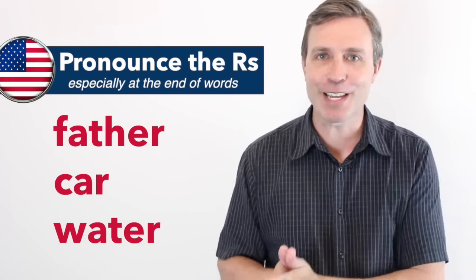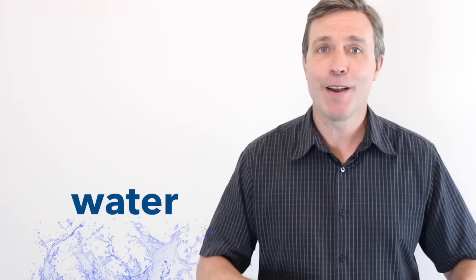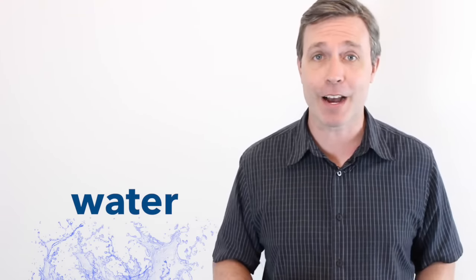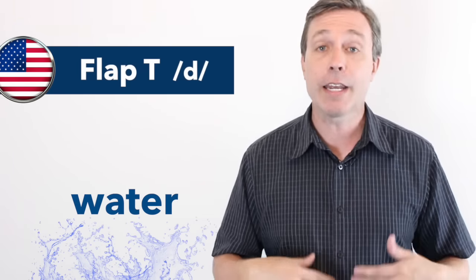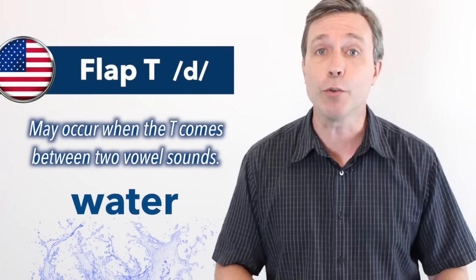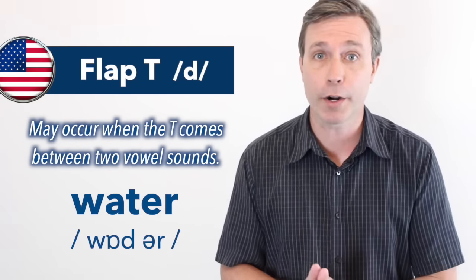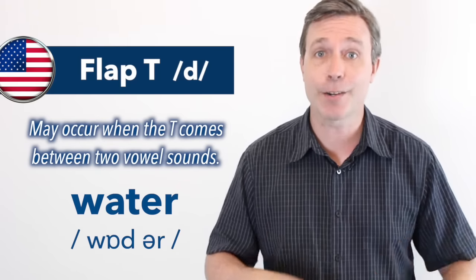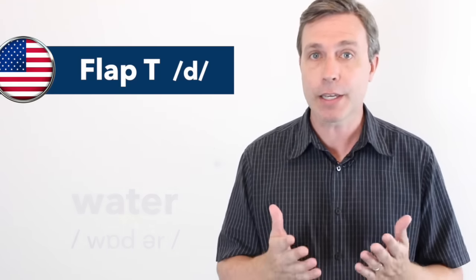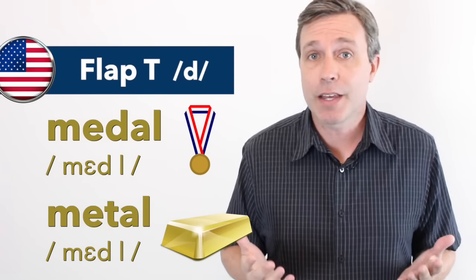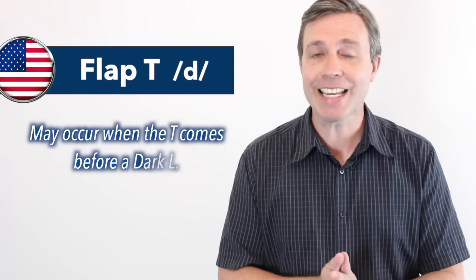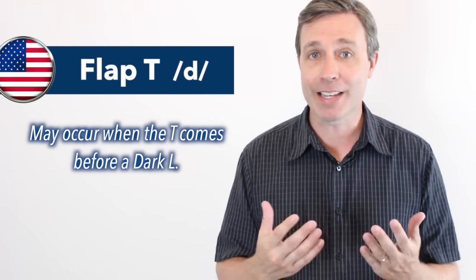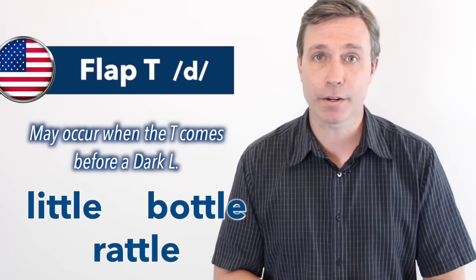We're going to build on this as we go through the lesson. I want you to think about that last word: water. Because this brings me to the next part of the American accent, which I think is very common — and I'm talking about the flap T. It often occurs when the T comes between two vowel sounds, like in the word water. You don't hear a true T; you hear a flap T. Water. This is why these two words — metal, medal — with the American accent, they sound like homonyms. A flap T may also occur when the T comes before a dark L, such as in the words little, bottle, rattle. You hear that slight D sound.